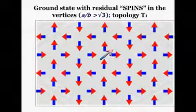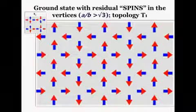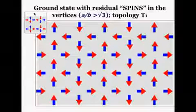On the other hand, if A over B is bigger than square root of three, instead of charges, the ground state has residual magnetic moment in the vertices. Again, the total magnetic moment of the system is zero.